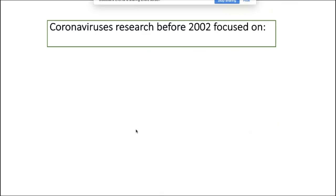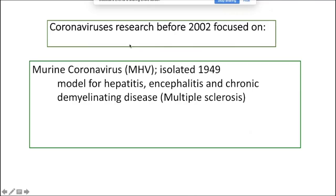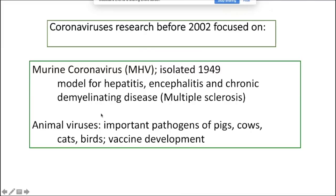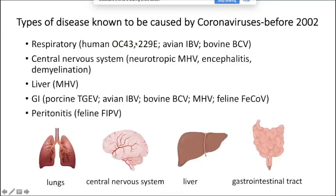Before 2002 with the emergence of SARS, coronavirus research focused mostly on murine coronavirus MHV, a model coronavirus isolated in 1949 that provides a model for hepatitis, encephalitis, and chronic demyelinating disease, and was often used as a model for multiple sclerosis. The other major direction of coronavirus research was the study of animal coronaviruses—important pathogens of pigs, cows, cats, and birds—with a lot of focus on vaccine development in the early days.